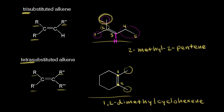Now let's look at why it's tetrasubstituted. For carbon one, there is one methyl group on one side and the alkyl group as part of the ring on the other side, so that carbon has two R groups bonded to it. Carbon two also has two R groups bonded to it — a methyl group and the other portion of the ring. That's why this is a tetrasubstituted alkene.